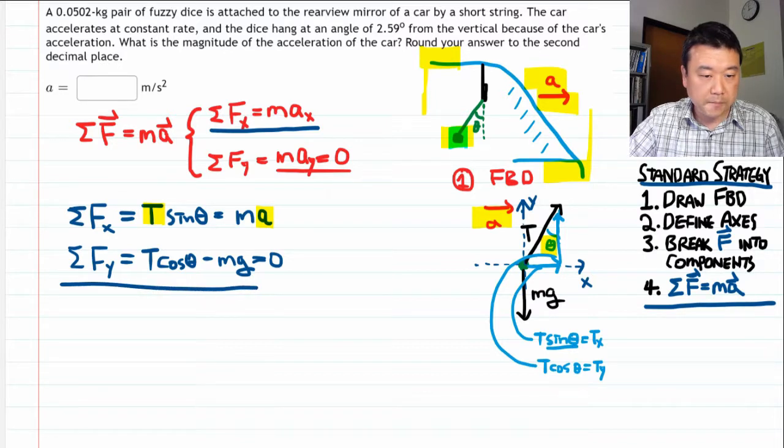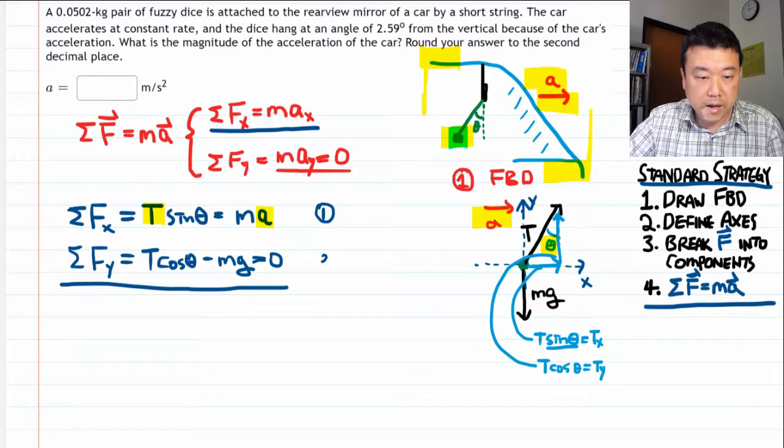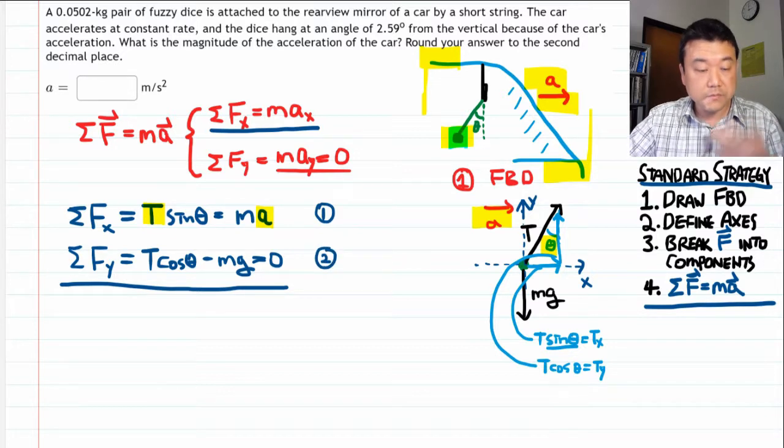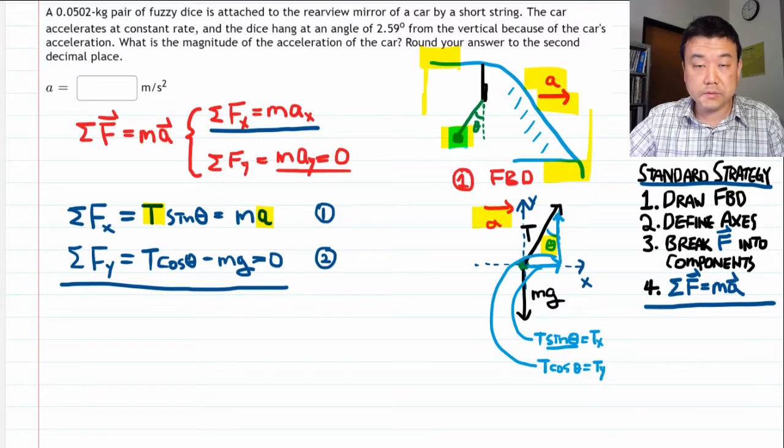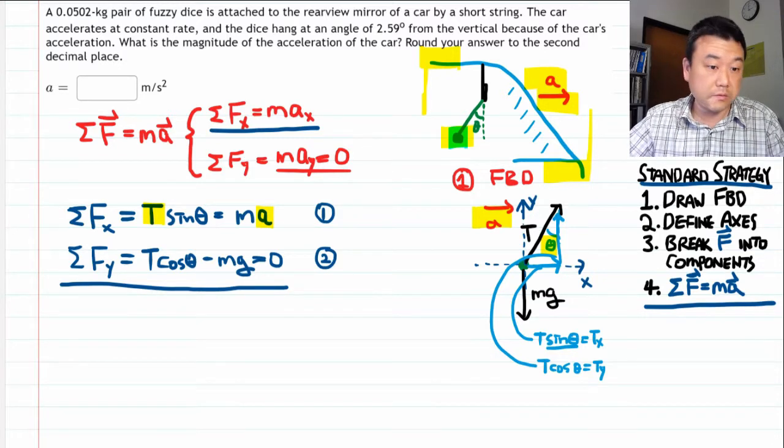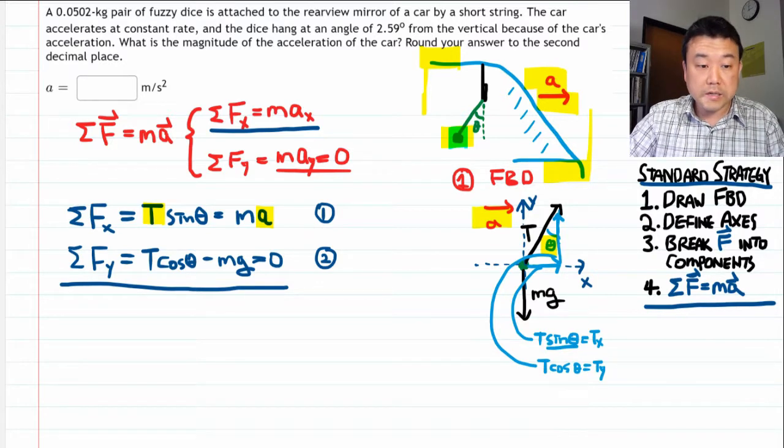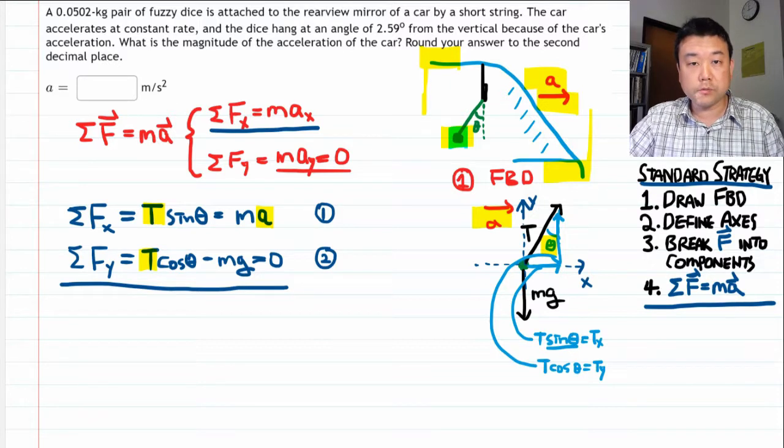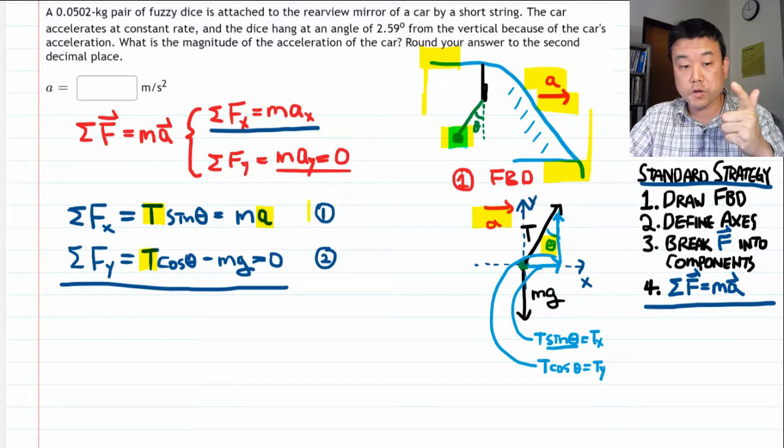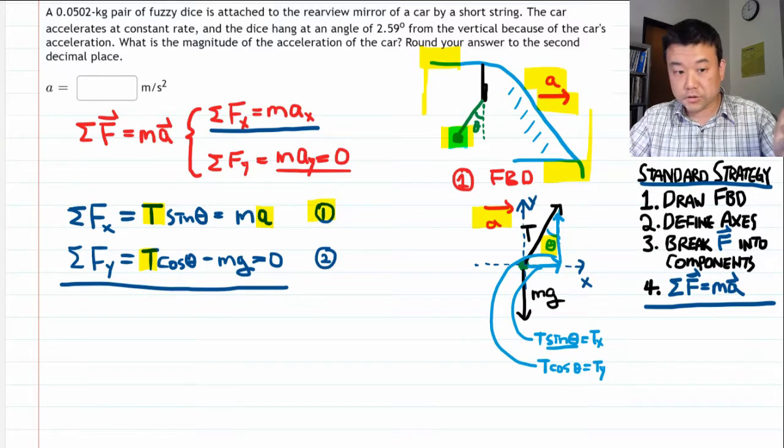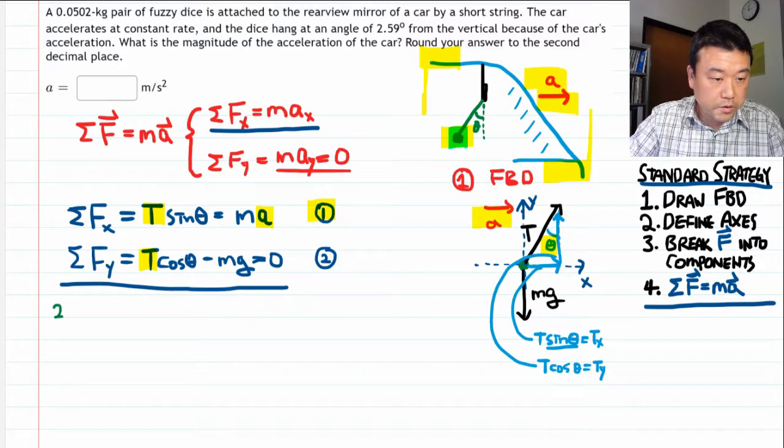It's a good point to stop, count the number of equations, and count the number of unknowns, and make sure that this is solvable. So the second equation didn't introduce any new unknowns. It just gave me tension again. So this is why we need a second equation, in order to be able to solve for tension and then plug it into equation one. So let's do that.